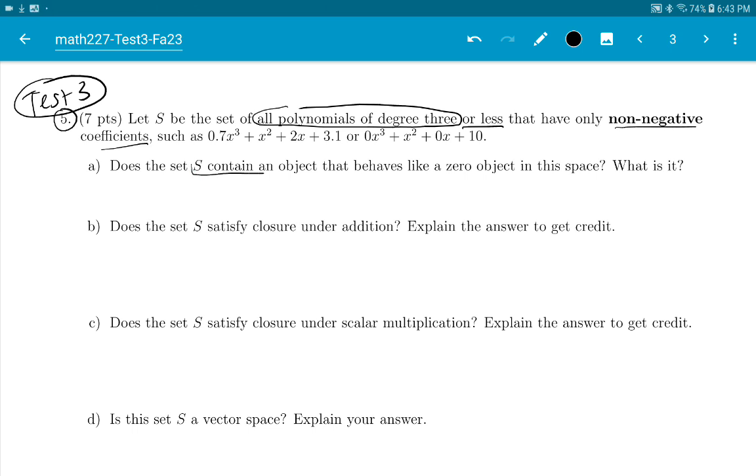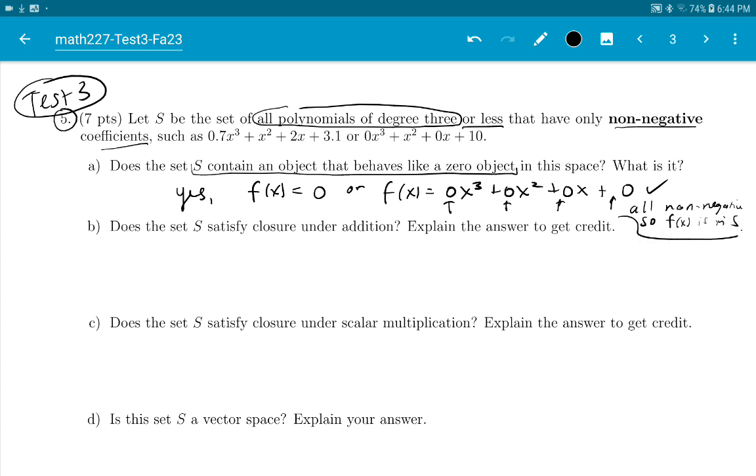Does S have an object that behaves like zero? Yes, it's the function f(x) equals zero. Or if you really want to be formal, you could say f(x) equals 0x³ + 0x² + 0x + 0. Same thing. If you add this function to any other function, the other one stays the same. So this is it. By the way, how do I know this is in S? Because notice these coefficients are not negative, all non-negative, so f(x) is in S. That's important to say.